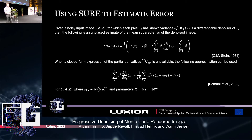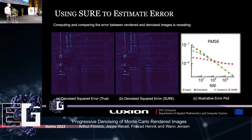SURE, Stein's Unbiased Risk Estimate, allows computing an estimate of the squared error of the denoised image even while treating the denoiser as a black box, which is a good treatment for a deep learning-based denoiser. SURE has appeared before in computer graphics literature, being used to guide adaptive sampling and optimize denoising parameters. The error estimates computed using SURE are of practical accuracy, particularly as the sample count increases, likely due to the distribution of the sample mean approaching a normal distribution, showing near one-to-one correspondence with the actual error computed using ground truth.